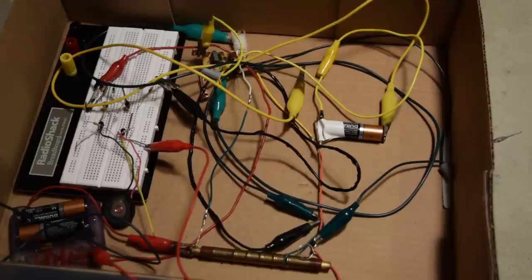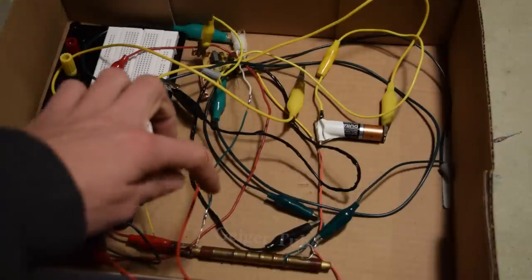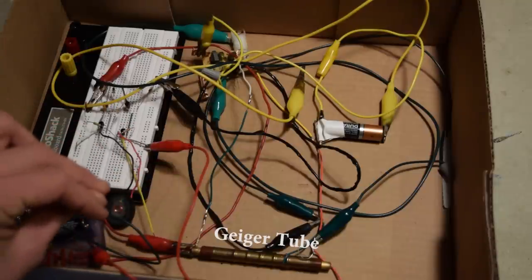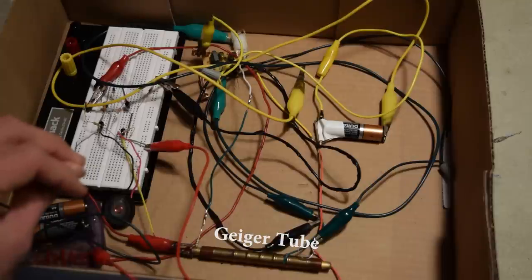So first I'm going to give you a rundown of the major components. The first is the Geiger tube. This is what actually detects the radiation. This is an SBM-20 Geiger tube that was purchased off of eBay.